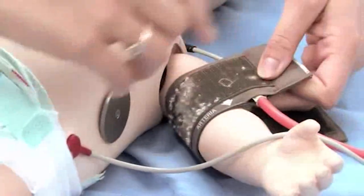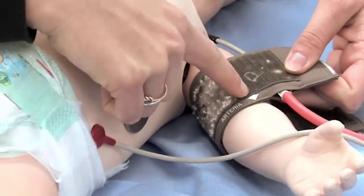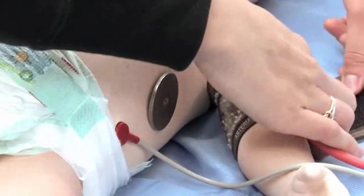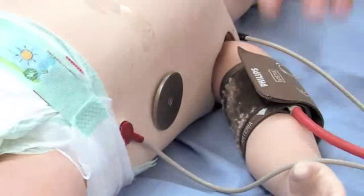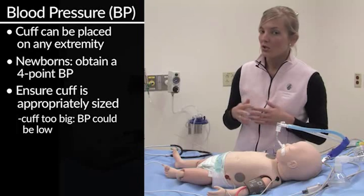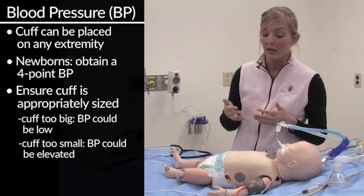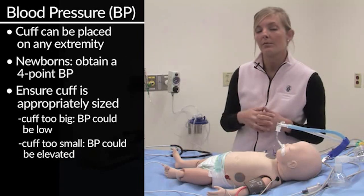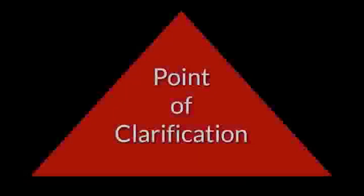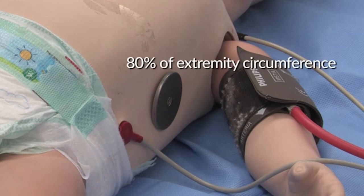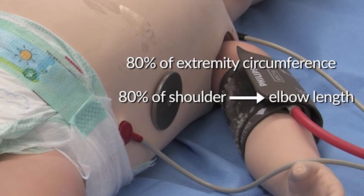Next, you'll want to look for the place where it indicates the artery. You'll want this arrow to line up with where the patient's artery should be. You should be able to easily enclose the patient's arm in the cuff. If the cuff is too big, you may end up with a falsely low blood pressure reading. If the cuff is too small, you may end up with a falsely elevated blood pressure reading. With an appropriately sized blood pressure cuff, the cuff bladder should cover 80% of the circumference and 80% of the length of the patient's upper extremity.